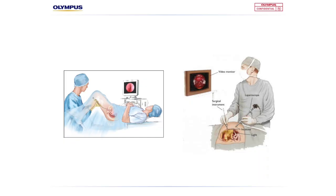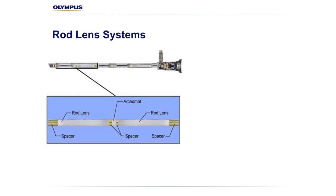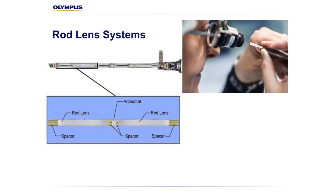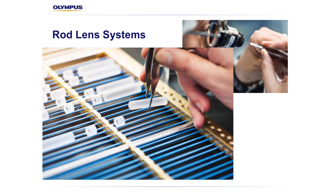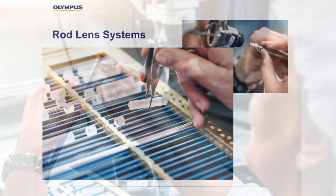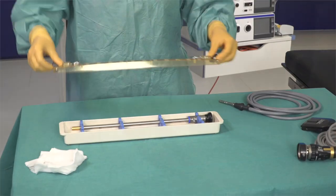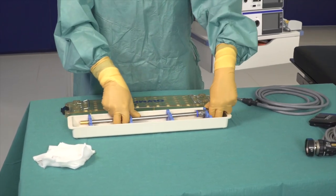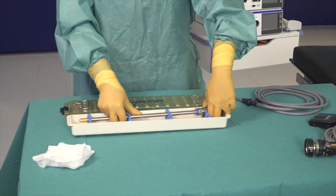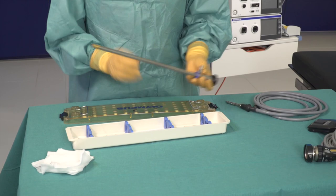Telescopes allow us to carry the surgical scene outside of its cavity and project it onto an ergonomically positioned surgical monitor. To maintain a high quality image where no detail is lost, telescopes must be made from specialised glass lenses and fibre optics, which means they need careful handling. Furthermore, the lens of the telescope is our surgical eye and it must be kept clean at all times.